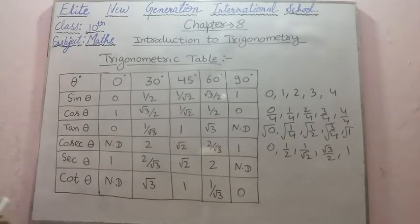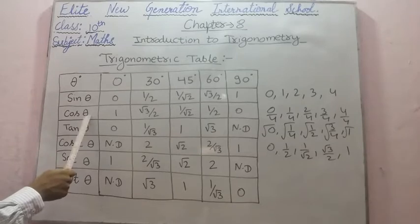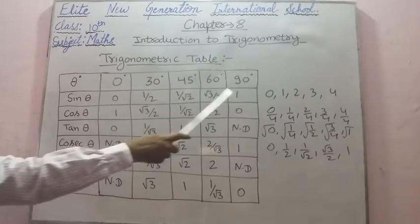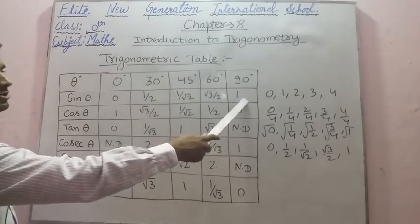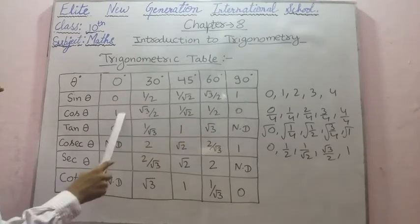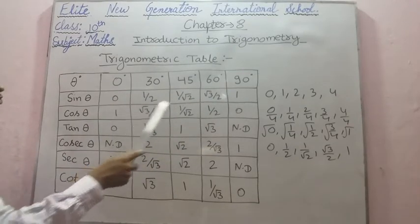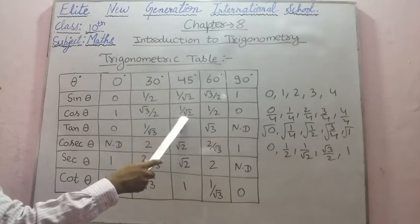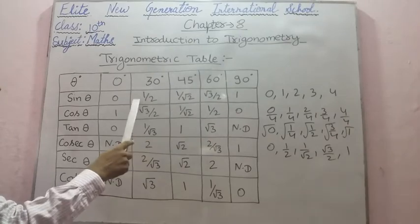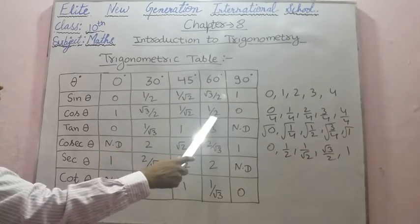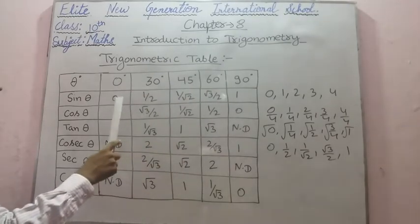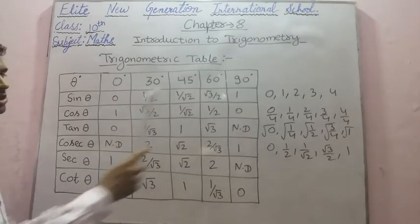Now for filling the value of cos theta, we start from the other end. So it will be 1, then root 3 by 2, then 1 by root 2, then 1 by 2, and then 0.